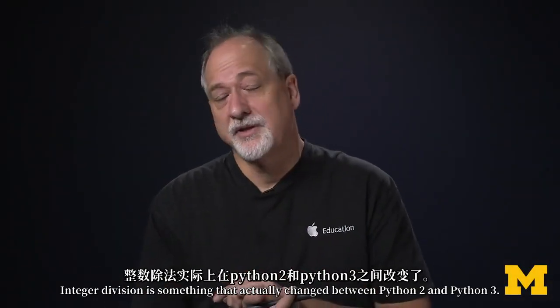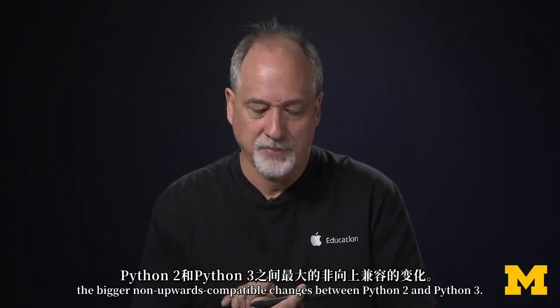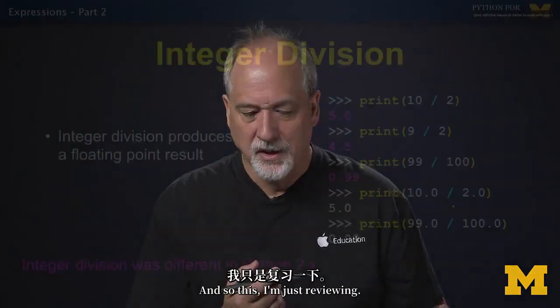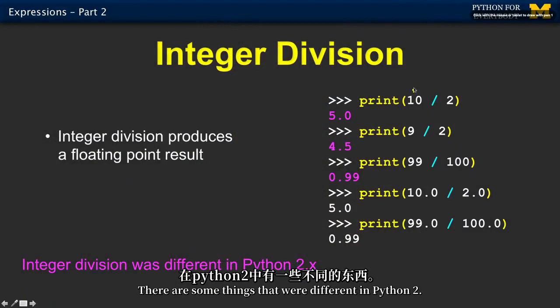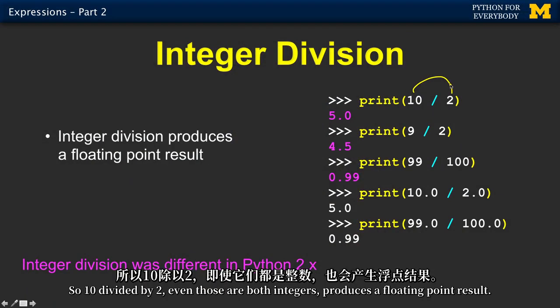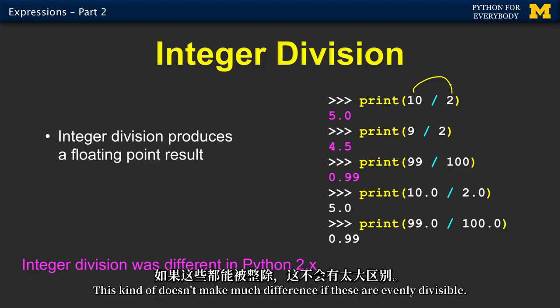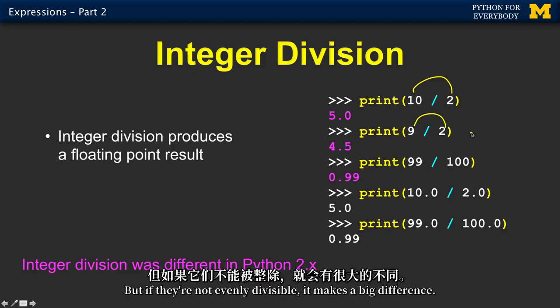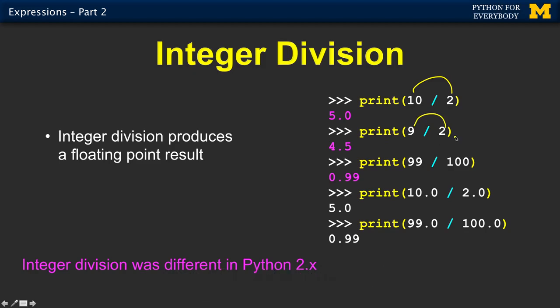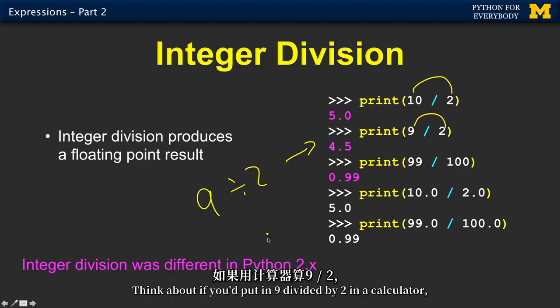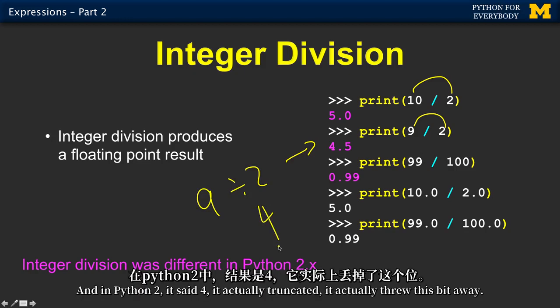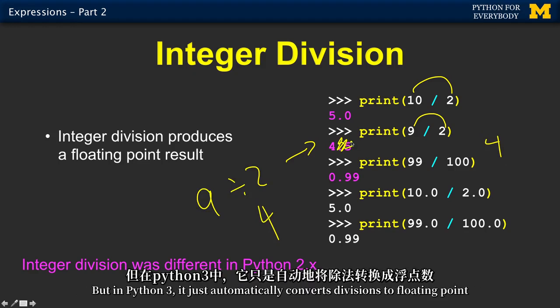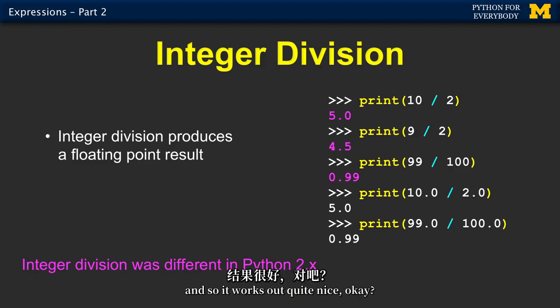Integer division is something that actually changed between Python 2 and Python 3. It's one of the bigger changes, the bigger non-upwards compatible changes between Python 2 and Python 3. So 10 divided by 2, even those are both integers, produces a floating point result. This makes kind of, doesn't make much difference if these are evenly divisible. But if they're not evenly divisible, it makes a big difference. So 9 over 2 is 4.5. Think about like if you put in 9 divided by 2 in a calculator, you wouldn't expect it to say 4. And in Python 2, it said 4. It actually truncated. It actually threw this bit away. But in Python 3, it just automatically converts divisions to floating point.